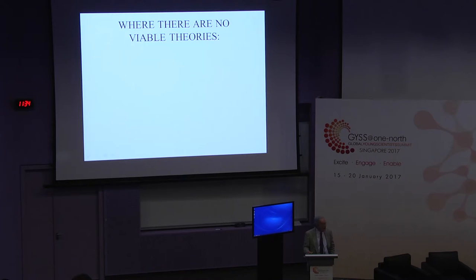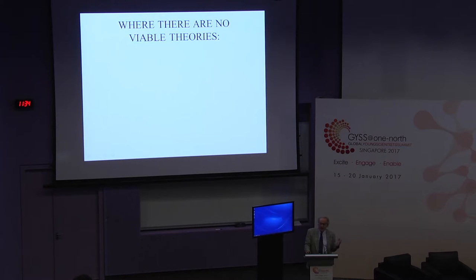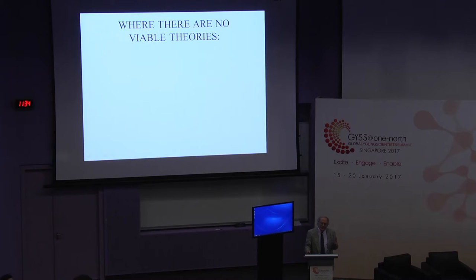The question is: what do you do if there are no viable theories? There are some questions in science where there are ten possible theories and you need an experiment to see which is true. But other problems in science have no theories at all — nothing to test. This is more in that category. Even bad speculations on how the brain works are in very short supply, for some reason.